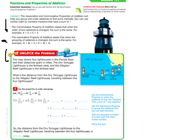Okay, so unlock the problem. The map shows four lighthouses in the Florida Keys and their distances apart in miles. The Dry Tortugas Lighthouse is the furthest away and the Alligator Reef Lighthouse is the furthest east. What is the distance from the Dry Tortugas Lighthouse to the Alligator Reef Lighthouse traveling between the four lighthouses?